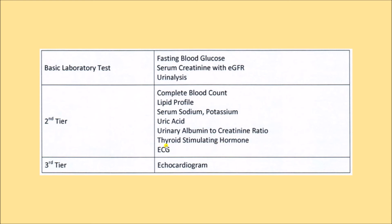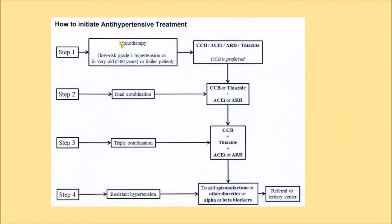This is the guideline to treat hypertensive patients recommended by the Department of Health and Family Welfare, Government of West Bengal. In step one, monotherapy with one drug is given — either a calcium channel blocker (CCB), ACE inhibitor, angiotensin receptor blocker (ARB), or thiazide. Ideally CCB is preferred; the most common drug to start with is amlodipine, a calcium channel blocker. When monotherapy fails, dual therapy is used: either CCB or thiazide combined with either an ACE inhibitor or ARB.